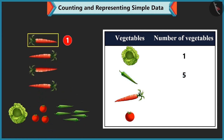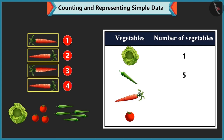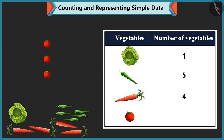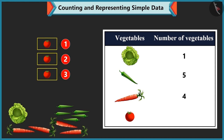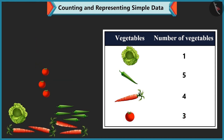Bubbly counts the carrots: 1, 2, 3, 4 — so they write 4 against carrot. Then she counts the tomatoes: 1, 2, 3 — and writes 3 against tomato.